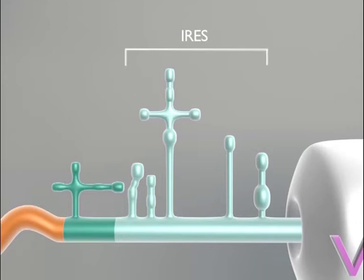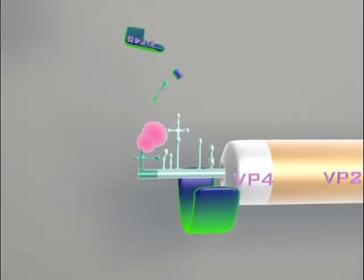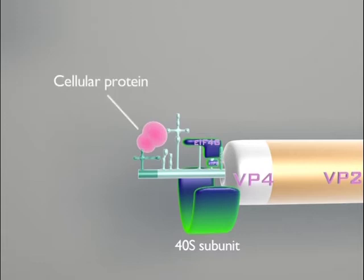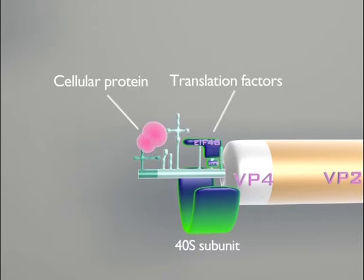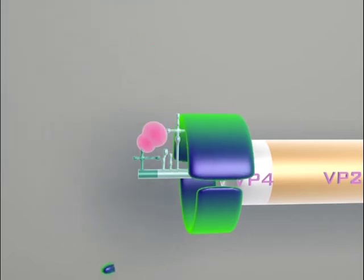Upon entry of the RNA into the cell, cellular proteins cleave the VPG. Then the viral RNA can be used as a template for translation. First, the ribosome subunits, with the help of cellular proteins like PCBP and the translation factors, bind to the IRES. As soon as the complete ribosome reaches the initiation codon, translation can begin.